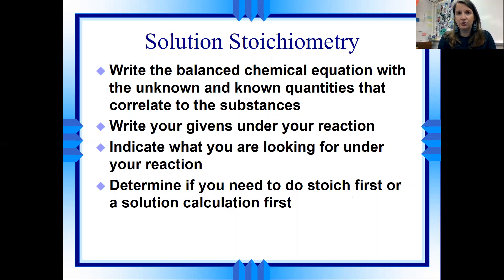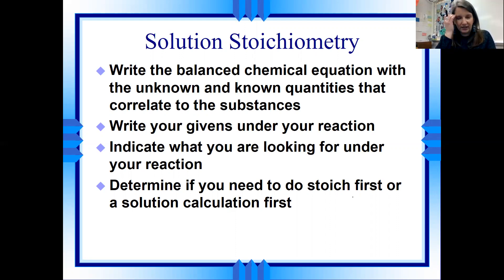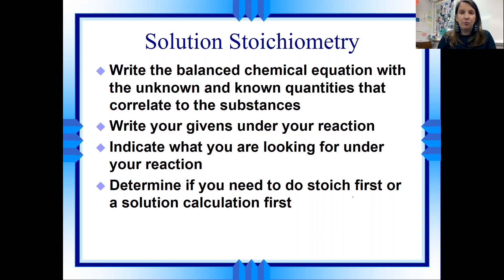When you have to do solution stoichiometry, you always start by writing a balanced chemical reaction, including your states of matter. Balance that thing. It's a good idea to write your quantities of your knowns and what you're looking for underneath your reaction, just as a visual to keep your eye on the prize. Then you have to figure out what you need to do first — are you going to do some stoichiometry, some molarity equations? What order are you going to perform your operations based on the information given?